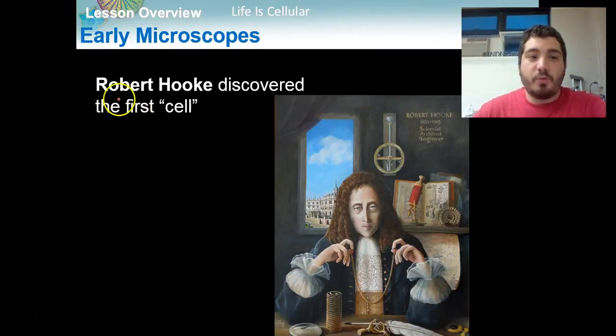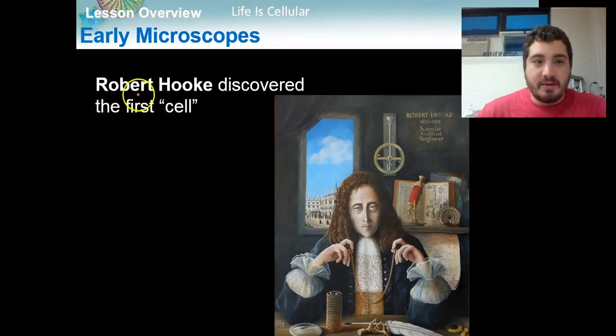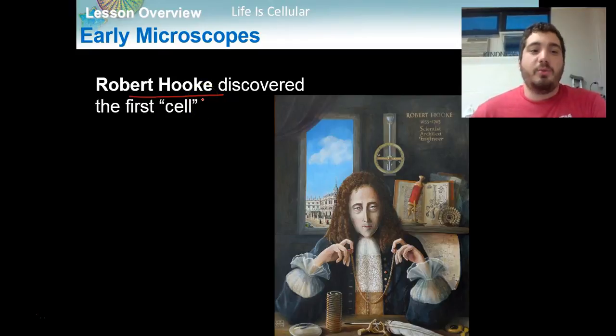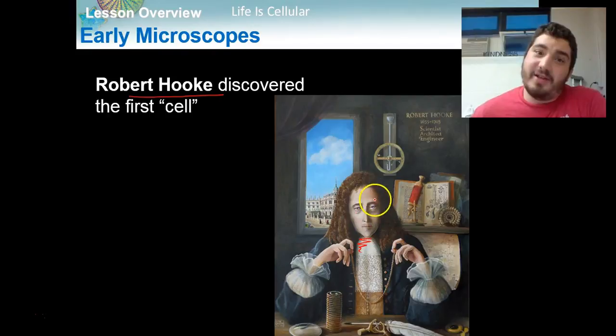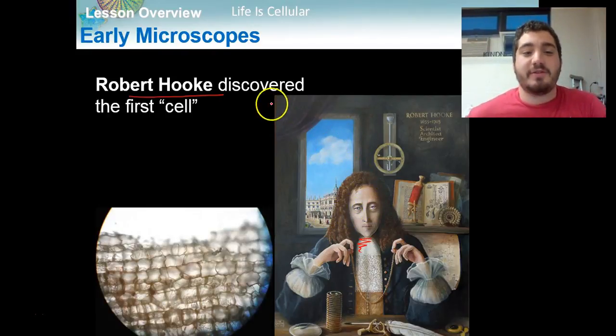In order to talk about cells, we have to talk about the beginning of early microscopes and people who looked at cells. So Robert Hooke was a scientist way back in the 1600s, 1700s, who was the first person to discover a cell. And this is a picture here of Robert Hooke. He really doesn't look like that happy of a guy. I'm sure if he was in Mr. Toto's biology class, he'd be much happier. So Robert Hooke was the first person to discover a cell.